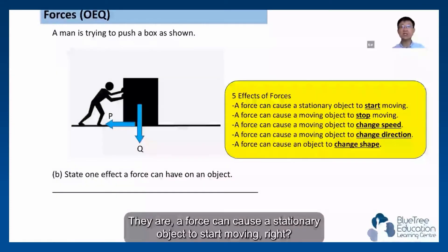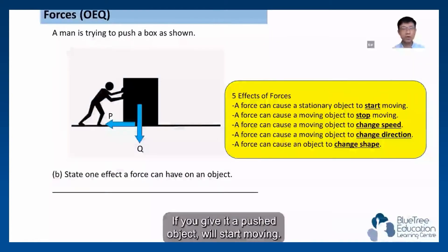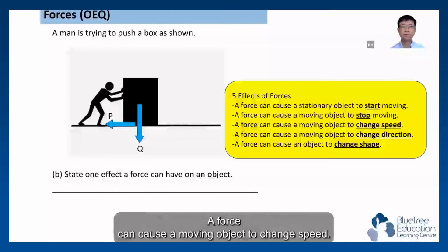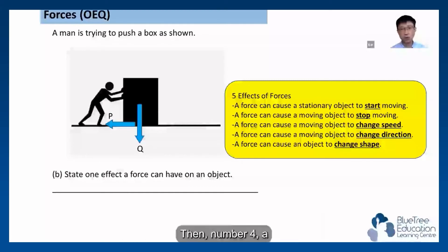A force can cause a stationary object to start moving. If you give it a push, the object will start moving. A force can cause a moving object to stop moving, or you can use a force to stop the object from moving. A force can cause a moving object to change speed. You give it a push and the object will move faster or slower.